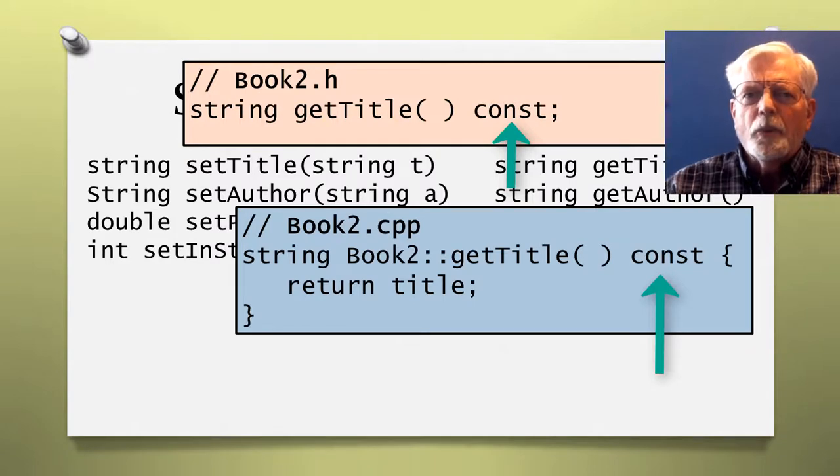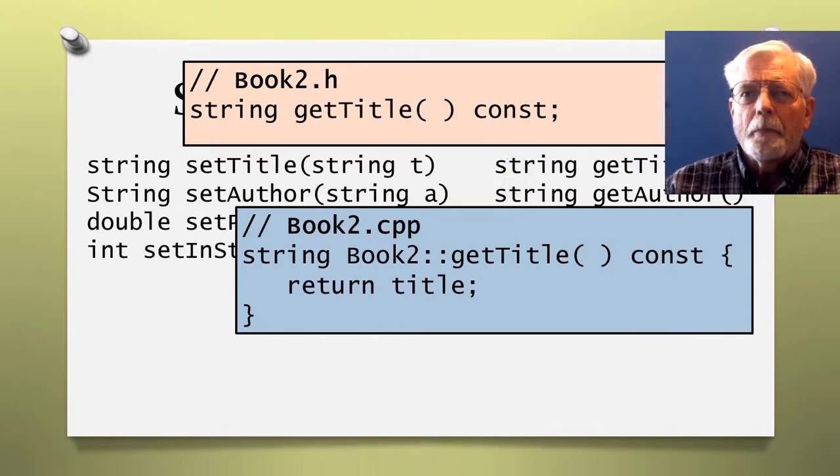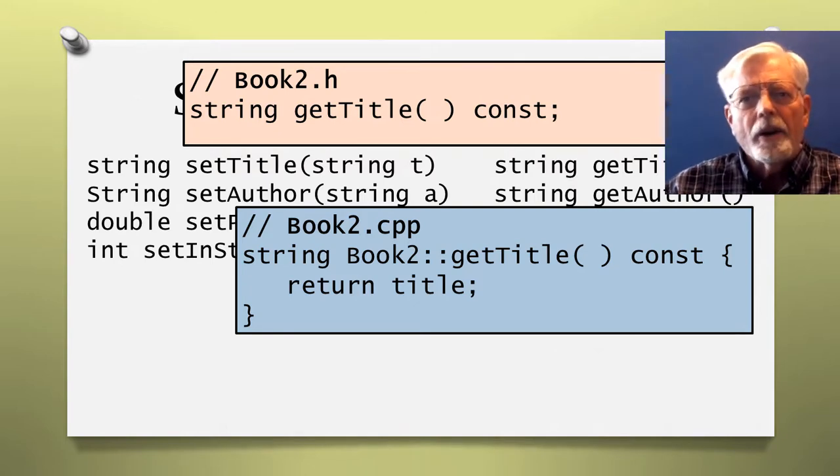The const keyword is applied to the getter methods by identifying a method with const. This would cause a compiler error if the method tried to modify any data. Although the getter methods in this project can't modify any of the object's member data, const is provided here for good programming practice to prevent future problems if the method was updated later.